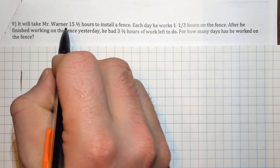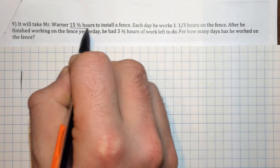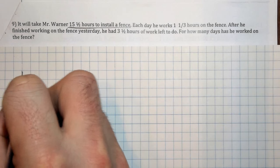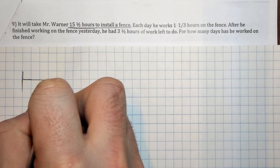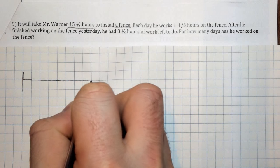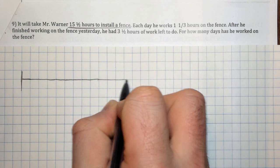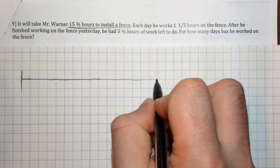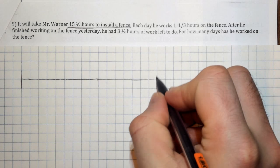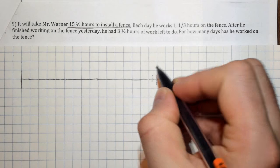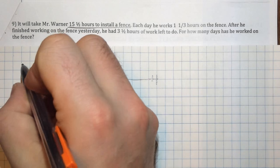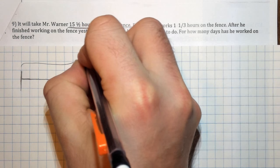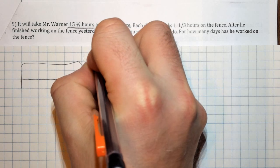So the fence in total is going to be 15 and a half hours to install the whole fence. So I'm going to go over 1, 2, 3, 4, 5, 6, 7, 8, 9, 10, 11, 12, 13, 14, 15. Then I'm going to go over 16 just to make sure that we can show kind of one half right there. So the whole fence is going to be 15 and a half.